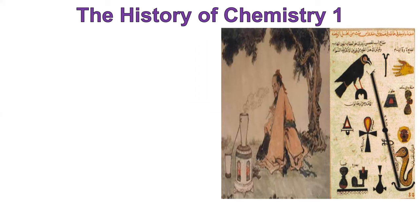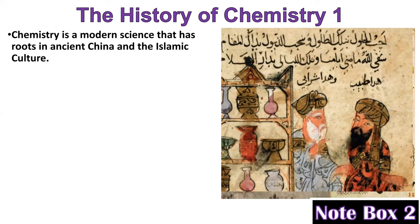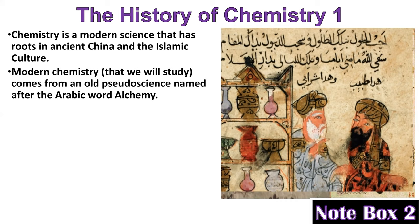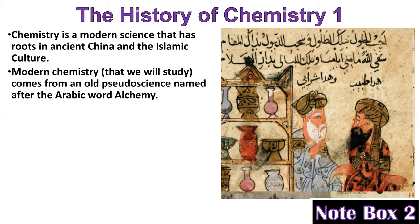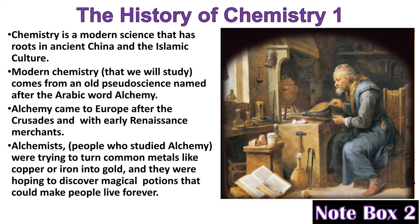The history of chemistry — this is note box two. Chemistry is a modern science that has its roots in ancient China and the Islamic culture. Modern chemistry comes from an old pseudoscience named after the Arabic word alchemy. Alchemy came to Europe after the Crusades and with the early Renaissance merchants. Alchemists were trying to turn common metals like copper or iron into gold, and they were hoping to discover magical potions that could make people live forever.